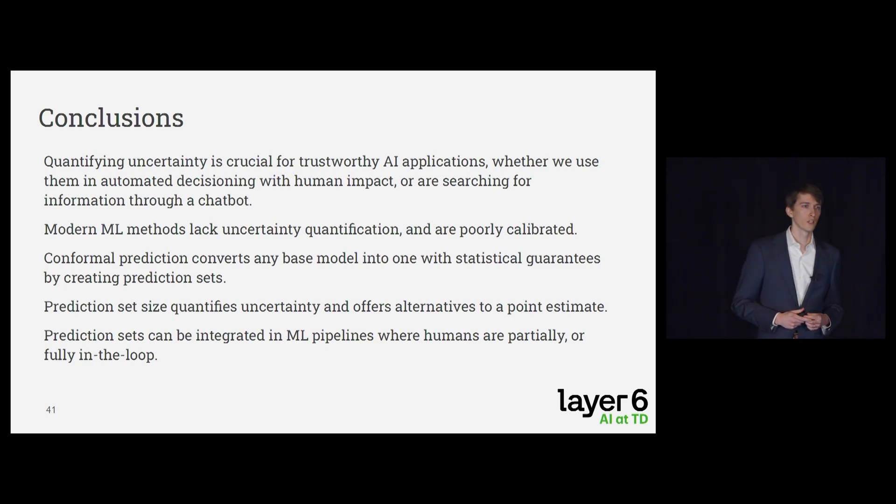So I hope that illustrates nicely some of the ways that conformal prediction could be used to quantify uncertainty. I believe this is crucial for trustworthy AI applications, especially in cases where we're using automated decisioning with high human stakes. And that's because when humans discuss with each other and when humans make decisions, we're always thinking about how confident we are and providing alternatives when we're not. So let me end there. I think we have plenty of time for questions and I'm more than happy to answer anything that comes to mind. Thank you for your attention.